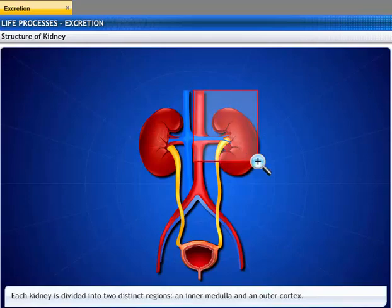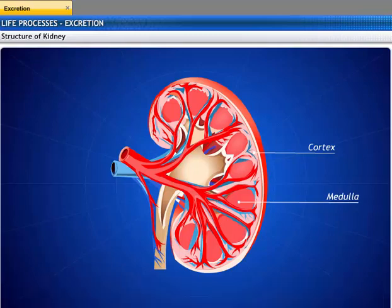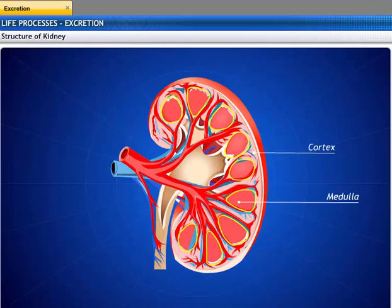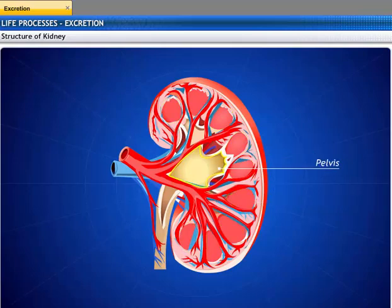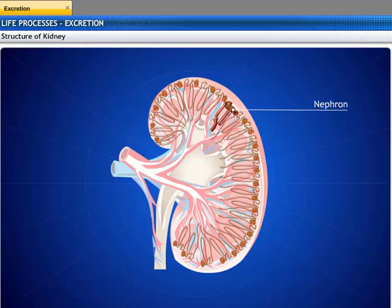Each kidney is divided into two distinct regions: an inner medulla and an outer cortex. The cortex forms a shell around the medulla. The medulla is composed of conical masses of tissue that lead to the pelvis. The cortex has a random arrangement of tiny tubules called nephrons, which are the functional units of the kidney.